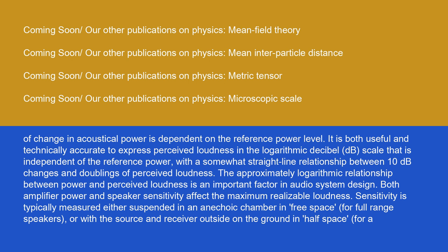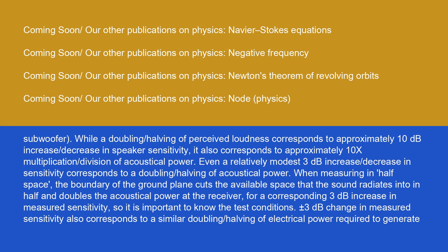Both amplifier power and speaker sensitivity affect the maximum realizable loudness. Sensitivity is typically measured either suspended in an anechoic chamber in free space for full-range speakers or with the source and receiver outside on the ground in half space for a subwoofer. While a doubling or halving of perceived loudness corresponds to approximately 10dB increase or decrease in speaker sensitivity, it also corresponds to approximately 10x multiplication or division of acoustical power. Even a relatively modest 3dB increase or decrease in sensitivity corresponds to a doubling or halving of acoustical power.